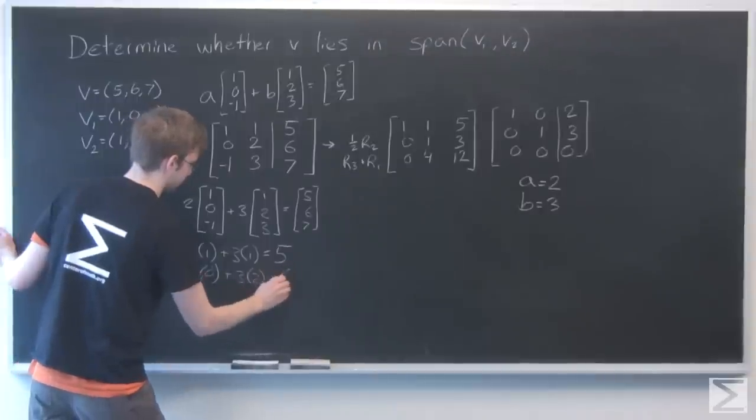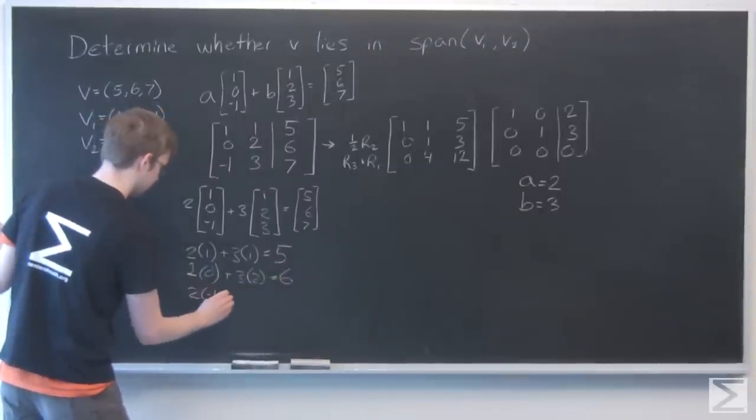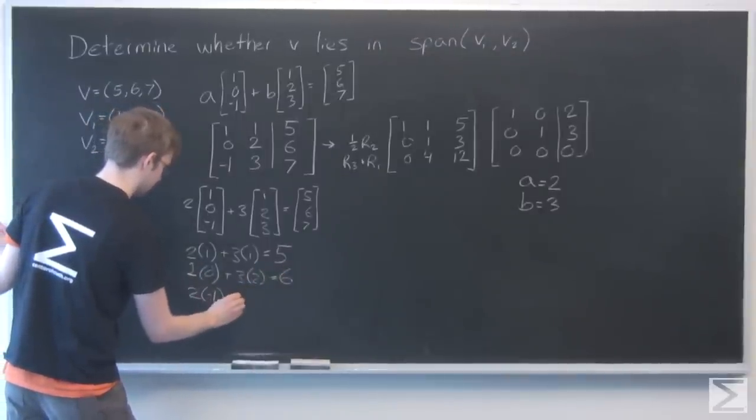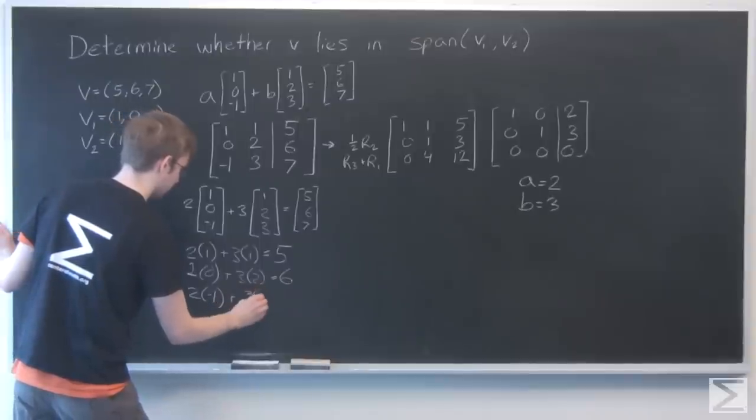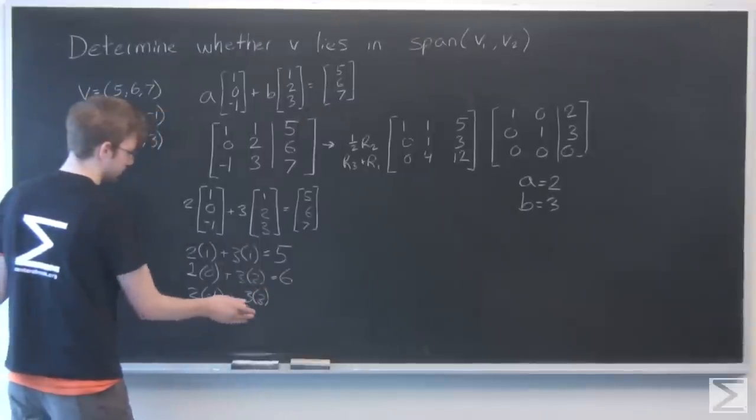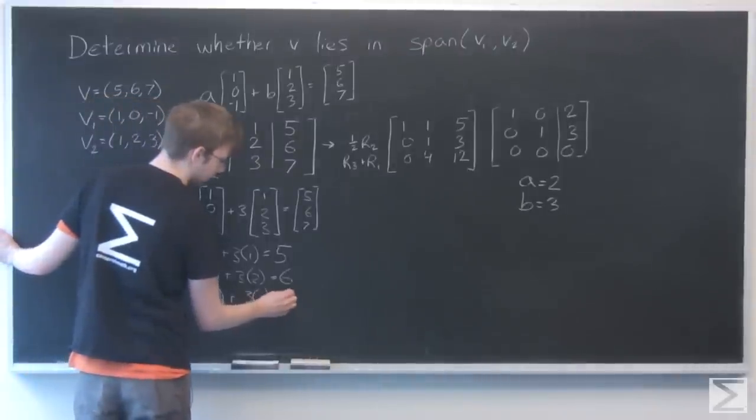2 times 0 plus 3 times 2 is 6, and 2 times minus 1 plus 3 times 3, that's minus 2 plus 9, which is indeed 7.